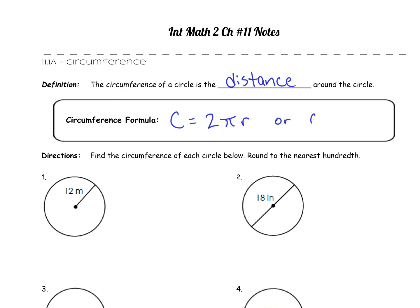The other formula we're going to use is circumference equals d times pi. I want to give you this formula because it can make our work a little bit easier. One formula has pi and 2r; the other has just d and pi. One depends on radius, the other depends on diameter. Keep in mind: r is radius and d is diameter.